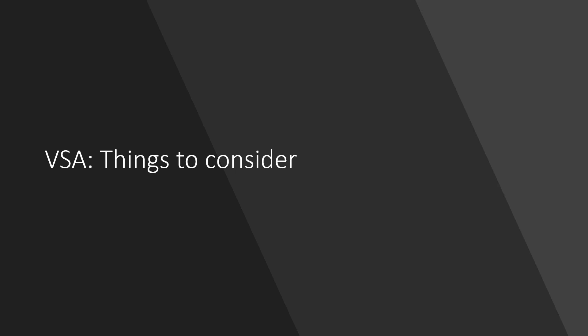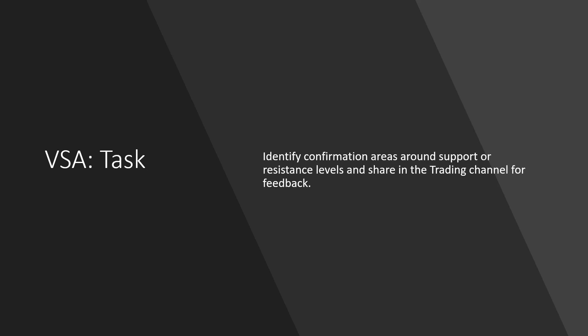That brings us to the end of part two of VSA. A good way to learn this and understand how it works is with a small task. Go look on various different markets — doesn't matter which market, could be crypto, FX, commodities, whatever it is — and try to identify those confirmation areas we discussed in this webinar, around areas of support and resistance. Share them into the trading channel and we'll go through them and give you feedback. This would be a good way for you to try and see if you can identify them yourselves. It's not always easy to see it in all markets, but if you stick with it, you'll definitely find a few that we can give you feedback on.